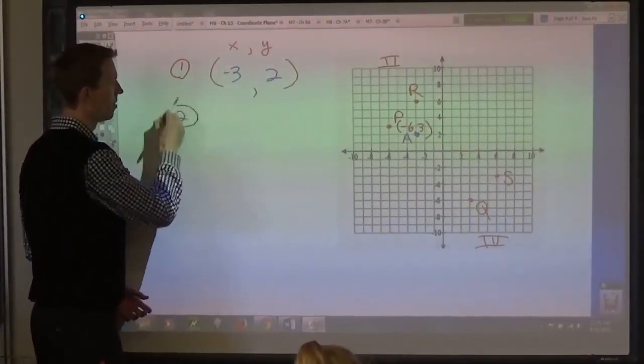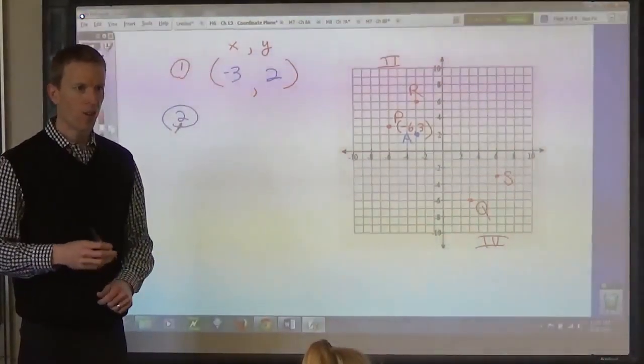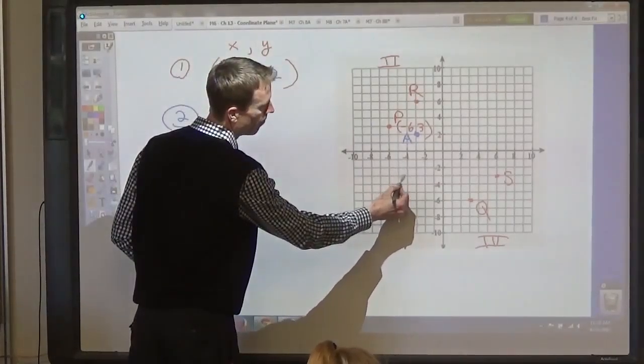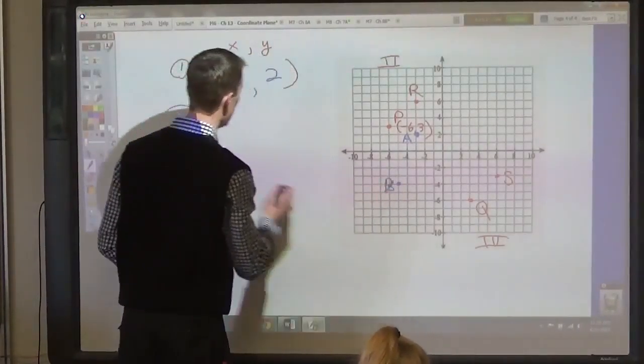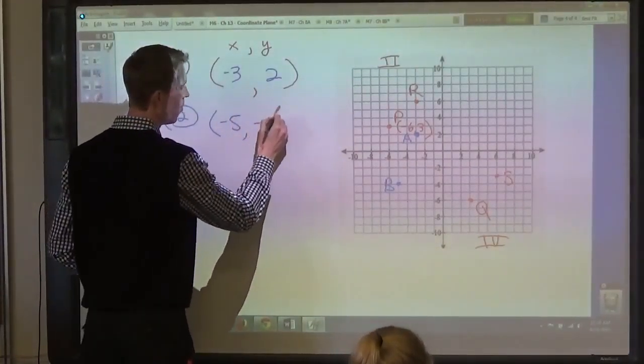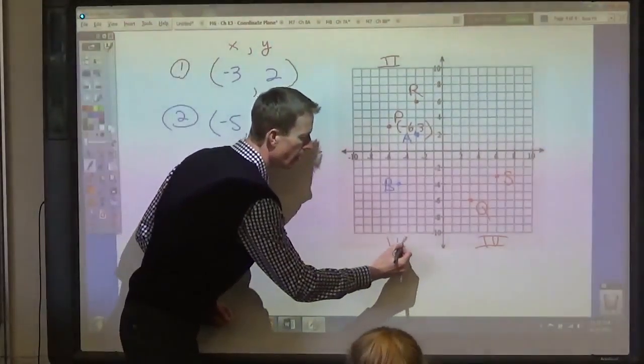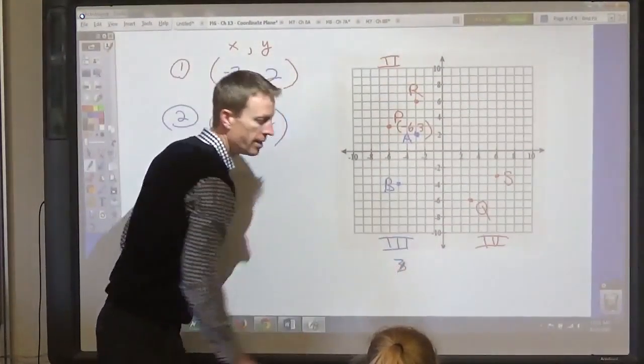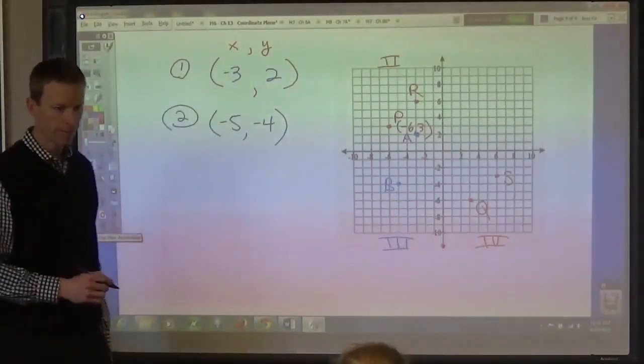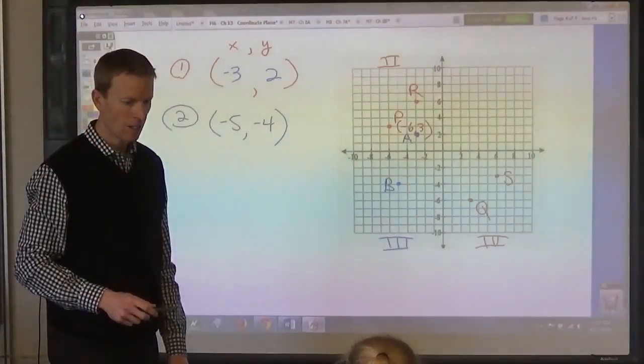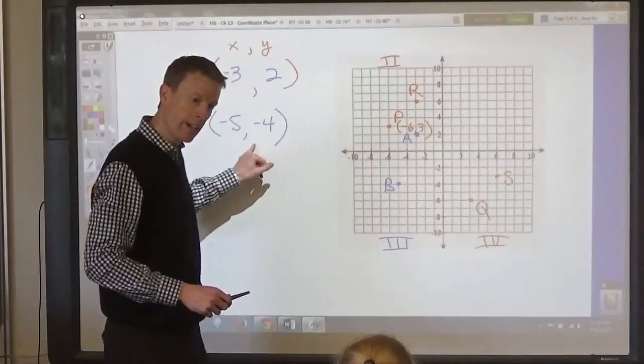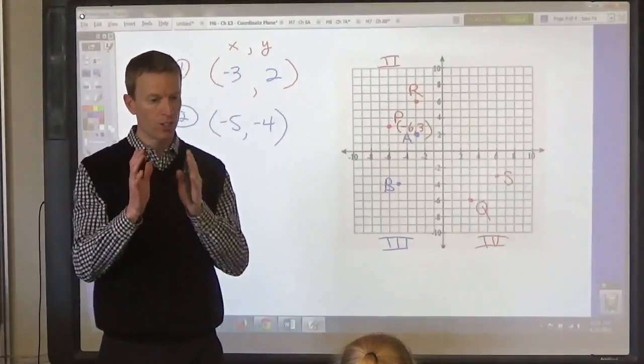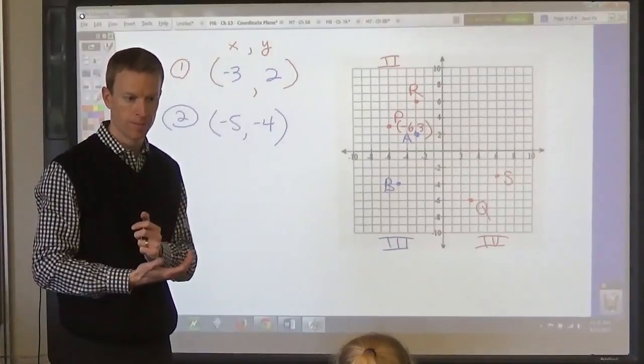Next one. Okay, Noah? Negative 5, negative 4. So it's right here. Is that B? Yep. And it's quadrant 3. So we have to have Roman numeral 3. Make sure that you don't write it as a digit. You have to write it as a Roman numeral. Why? Because it distinguishes this from a coordinate. You don't write coordinates as Roman numerals. We write the quadrants as Roman numerals. So that way, when you see the Roman numeral, you know it's referring to the quadrant number.